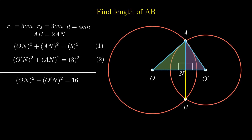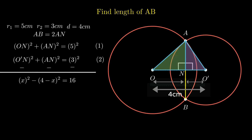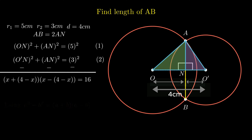Again, this equation can't be simplified further as segment ON and O'N are different. The solution is substitution. From the figure, segment ON and segment O'N form segment OO', which equals 4 cm. So if we assume segment ON equals X, segment O'N becomes 4 minus X. Now our equation can be simplified. Using the identity A squared minus B squared equals (A plus B)(A minus B), we get (X plus 4 minus X)(X minus 4 plus X) equals 16, which on further simplification gives us 2X minus 4 equals 4, therefore X equals 4.